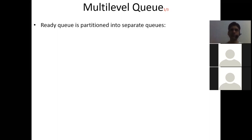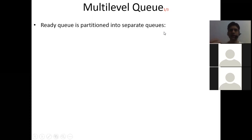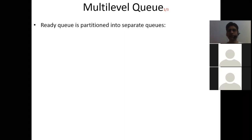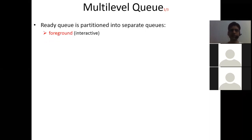Suppose we put high priority processes in one section and low priority processes in another queue, so that we can give different treatment to each. For interactive processes, we need frequent switches between processes, so round-robin works better. In this manner we can achieve that flexibility. So let's see how we are bifurcating this ready queue.